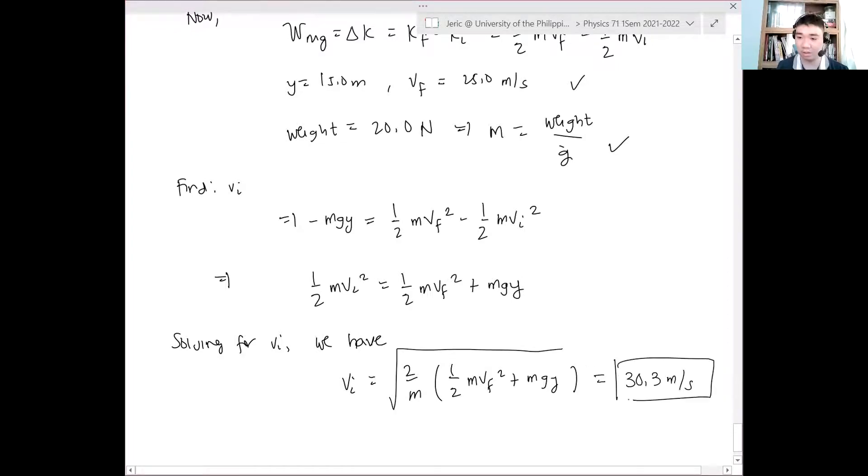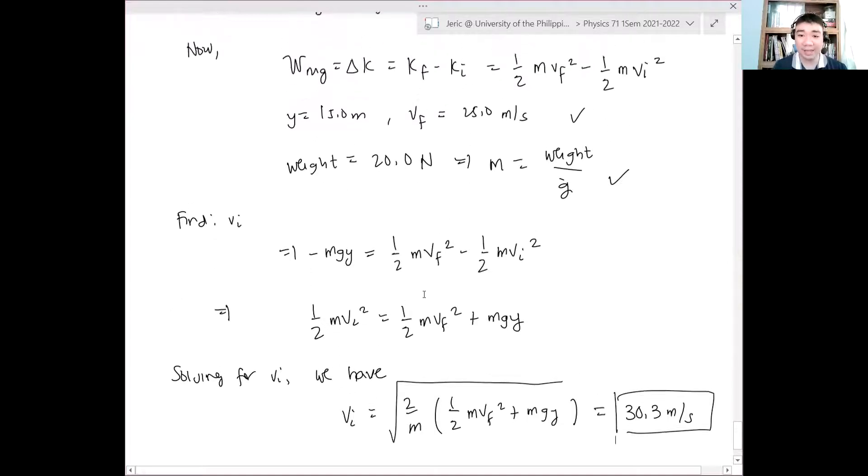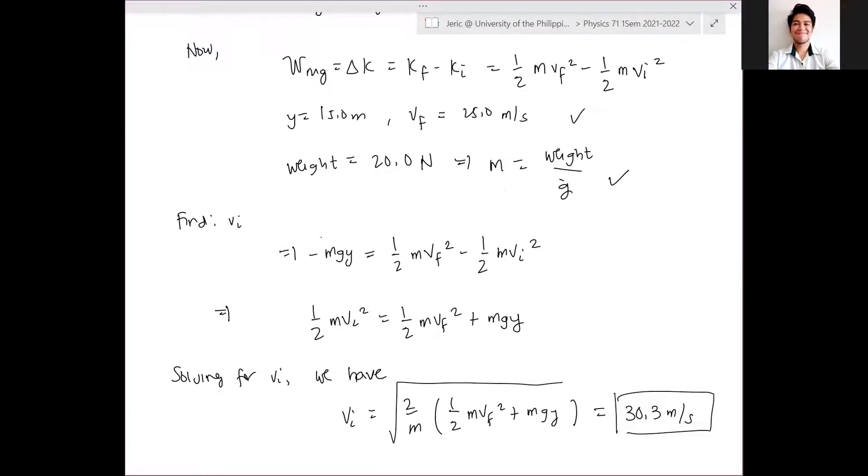And when we do that, ang lalabas ay 30.3 meters per second. That is the answer. I hope you get this. Ang point lang is, negative yung magiging work. Therefore, instead of bibilis yung object, babagal yung object. Which is true. At a higher height, bumabagal yung object. Until it reaches the maximum height, we're in the velocity band.